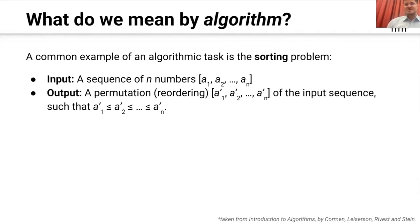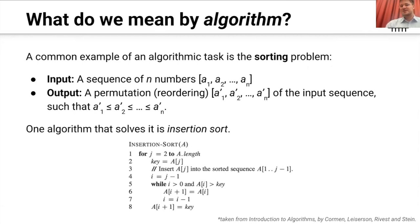An algorithmic task is typically defined by specifying what the input and output should satisfy. One traditional problem is the sorting task, where our input is a sequence of n numbers a1 to an, and what we want as output is some permutation or reordering of those n numbers — a1 prime, a2 prime, and so on — such that the numbers are sorted. One possible algorithm that solves it is insertion sort, which gradually goes through elements one at a time, keeping the sequence partially sorted up to that location. At every step it takes the item at position j and finds the right place in the sequence from one to j minus one. We can prove that if you do this iteratively, you end up with a sorted sequence.